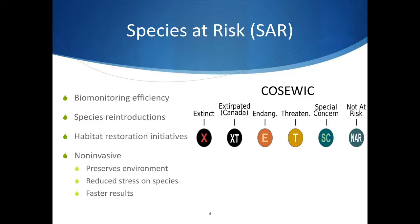While eDNA began as a presence or absence tool, it can be used to answer a vast range of questions for species at risk, invasive, keystone, and indicator species. With species at risk, we can apply eDNA methodologies to improve biomonitoring efficiency and to aid in restoration efforts. For example, using temporal sampling, we can monitor reintroduction efforts over time to track habitat usage. This can also be applied to monitoring the effectiveness of habitat restoration initiatives, such as monitoring the adoption of artificial spawning grounds constructed specifically for species at risk.